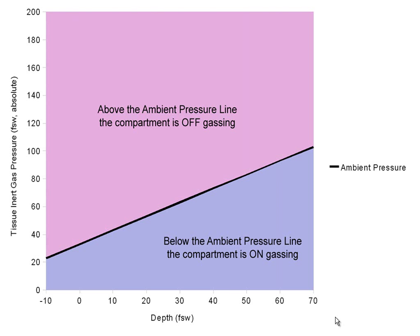The first thing I'm going to talk about is what do decompression computers really do? There are dissolved gases in our blood all the time. As we're standing here, we have a partial pressure of nitrogen in our tissues of about 0.79. And as we change the ambient pressure by going underwater, the amount of dissolved gases in our bloodstream and bodies changes.